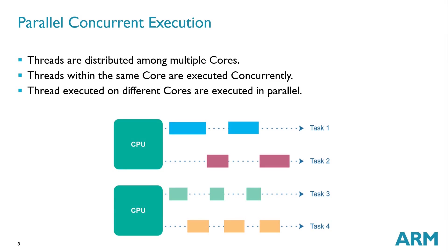With an OS introduced into a multi-core system, that is where we have parallel concurrent execution, where multi-threading is now spread out across multiple cores. Within the same core, tasks are executing concurrently. For example, Task 1 and Task 2 are running concurrently, and Task 3 and Task 4 are running concurrently. But across both cores, we say they are executing in parallel — Task 1 and Task 2 are executing in parallel with Task 3 and Task 4.